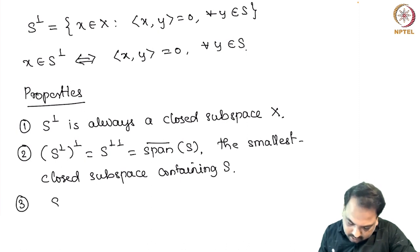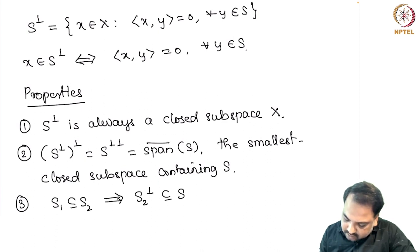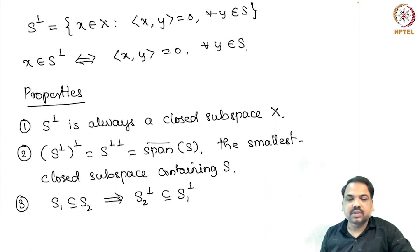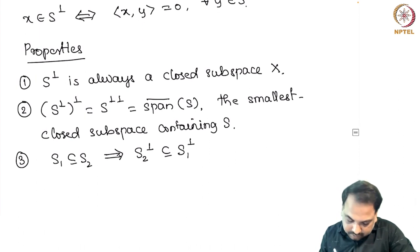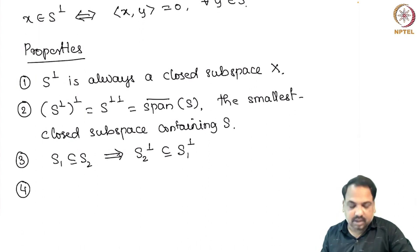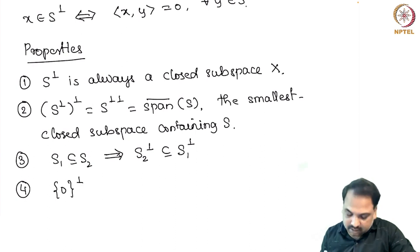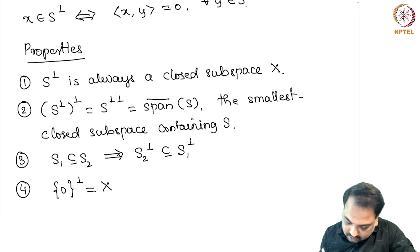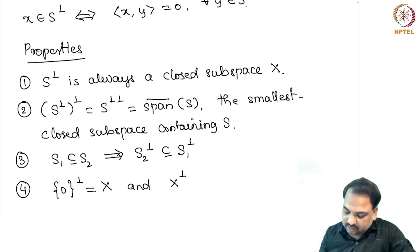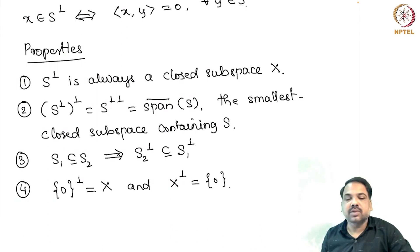The third condition is: if S1 is a subset of S2, then S2⊥ is contained in S1⊥, so the inclusions get reversed. The fourth property: the orthogonal complement of {0} in X is the full space X, and the orthogonal complement of X in X itself is nothing but the zero space {0}. These results can be proved very easily.